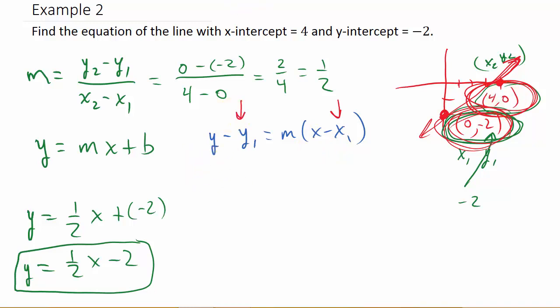So here we've got y minus the y coordinate. We're using the point 4, 0, so that's minus 0 equals m, which is 1 half, times x minus the x coordinate for the point which is 4. And so we get y minus 0 is y equals, distribute the 1 half, so that's 1 half x, and 1 half times 4, well that's 2, and so minus 2.